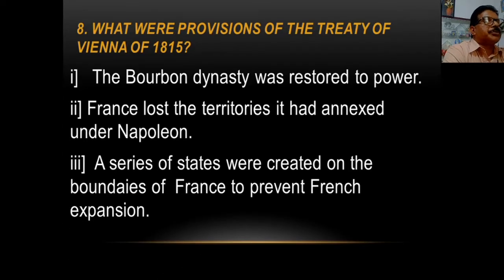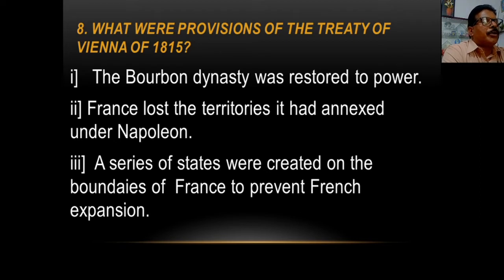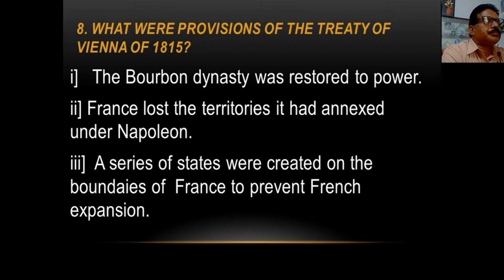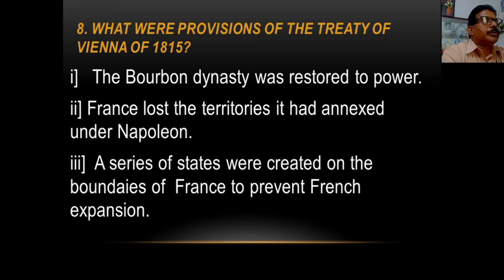What were the provisions of the Treaty of Vienna of 1815? In 1815, the famous Battle of Waterloo took place — Napoleon was defeated. After the defeat of Napoleon, a treaty was signed in Vienna in 1815. Let us find out what were the provisions of the Treaty of Vienna of 1815.